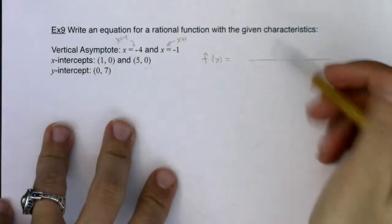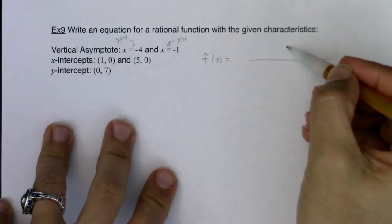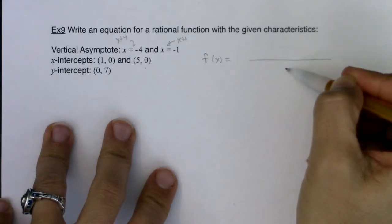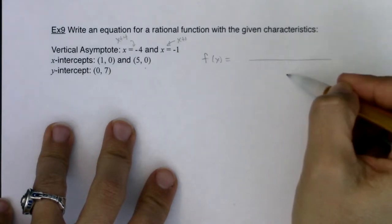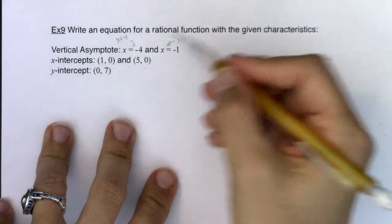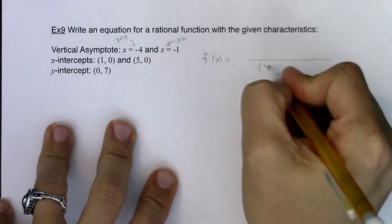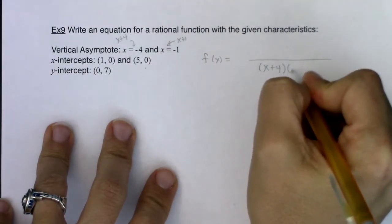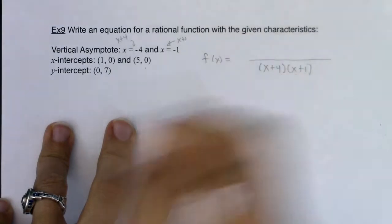Well, where do vertical asymptotes live? Do they live where your numerator only zeroes out, where your denominator only zeroes out, or where both zero out? And if we think back to vertical asymptotes, they occur when your denominator only zeroes out.